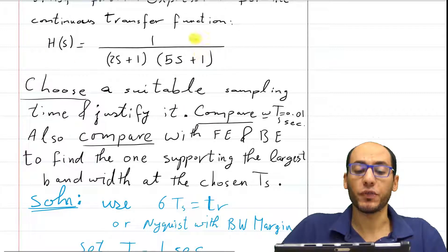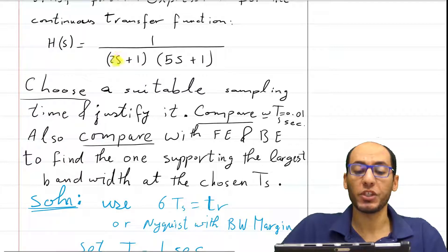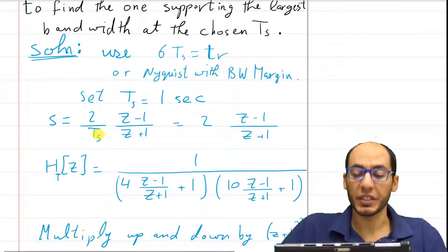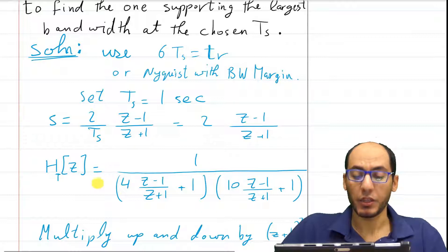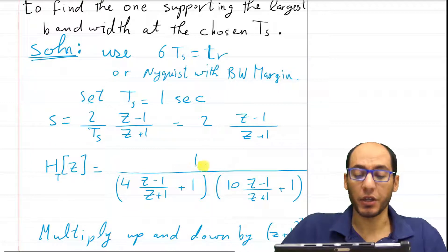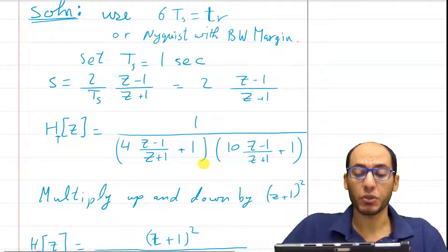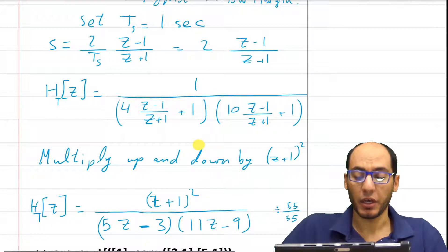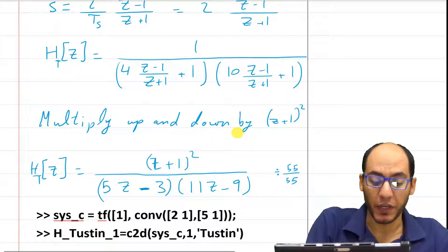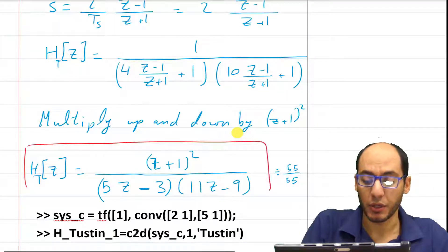We want to replace H(S) with a discrete time system. I'm going to replace each S with 2 over Ts times Z minus 1 over Z plus 1 — that is 2 over 1, times Z minus 1 over Z plus 1. You obtain this value. This transfer function is the final expression, but if you'd like to simplify it further, multiply numerator and denominator by (Z+1) squared and this becomes the final convenient expression.